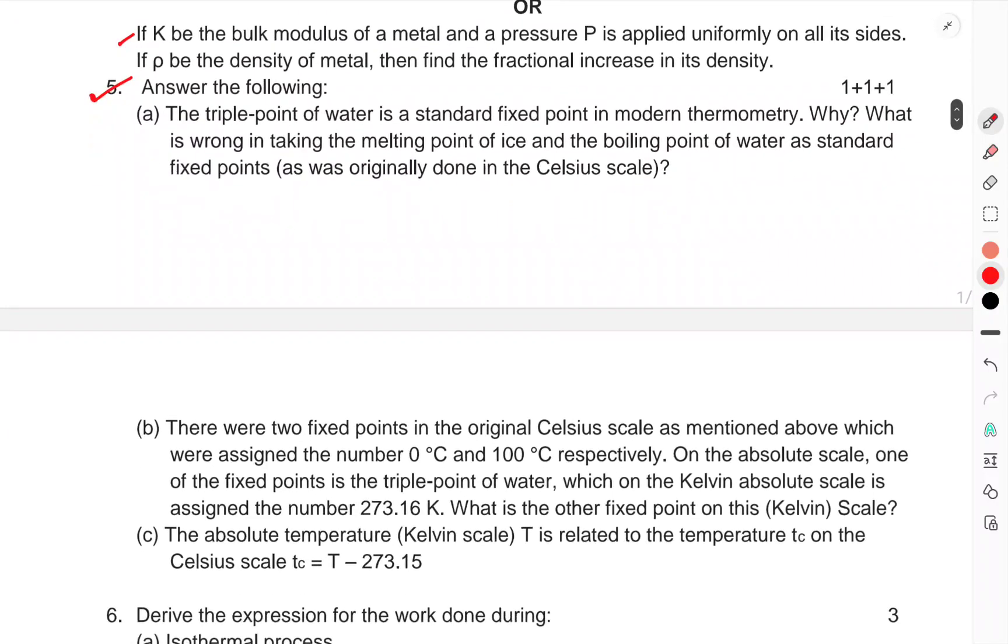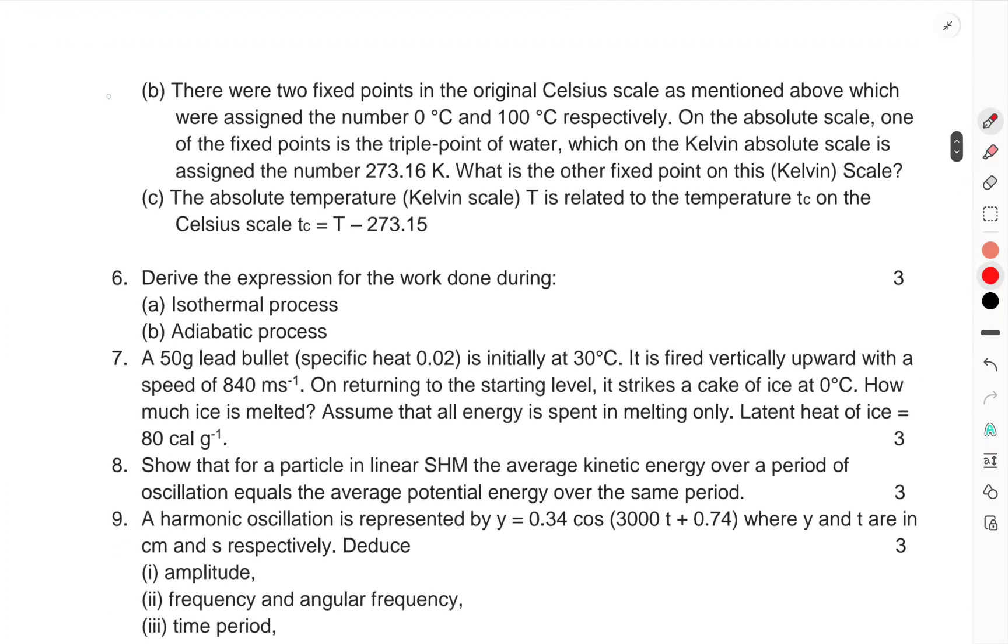Question 5: Answer the following. (a) The triple point of water is a standard fixed point in modern thermometry. Why? What is wrong in taking the melting point of ice and boiling point of water as standard fixed points as was originally done in the Celsius scale? (b) There were two fixed points in the original Celsius scale as mentioned above, which were assigned the numbers 0°C and 100°C respectively on the absolute scale.